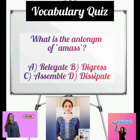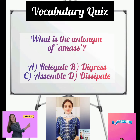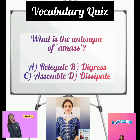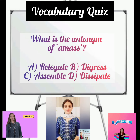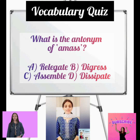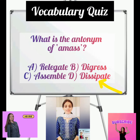What is the antonym of amass? Options are relegate, digress, assemble, and dissipate. Amass means kisi cheez ko sarankshit karna, store karna badi maatra mein. Dissipate hota hai koi cheez ghatti jana, kam hote jana. So the right answer is option number D, dissipate.